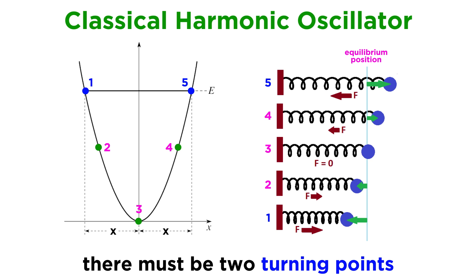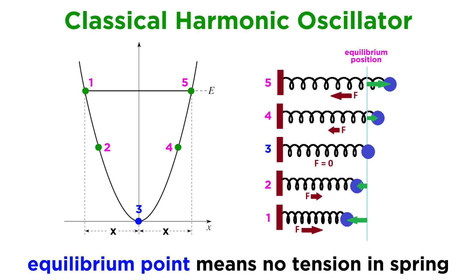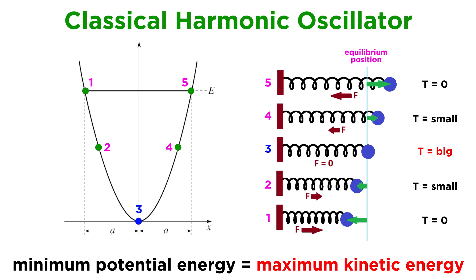These are the points located at x equals plus or minus x, where the particle changes directions. Second, there is an equilibrium point located at x equals zero. This is the point of lowest potential energy, such as the case where there is zero tension in a spring, as opposed to the tension that results from stretching or compressing the spring in one direction or the other. This is also the point where kinetic energy is maximized as the particle moves along its path, as total energy must be conserved.